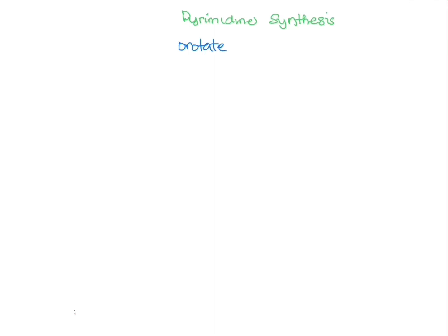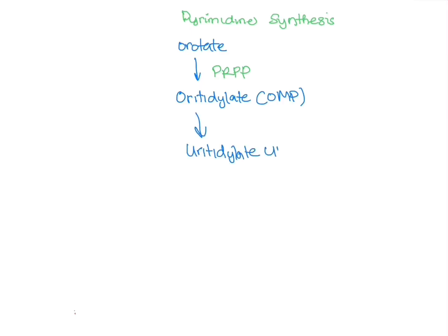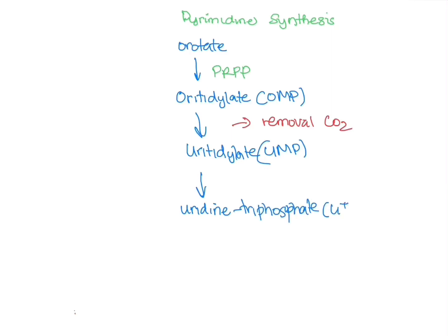Dihydroorotate undergoes an oxidation reaction using NAD+ and this creates orotate. Similar to purines where we use PRPP and IMP, in the pyrimidine process we use orotate and PRPP. This forms OMP. OMP is used to form both UMP for uracil and CMP for cytosine. The first reaction is that OMP loses a carbon dioxide group to form uridylate or UMP.